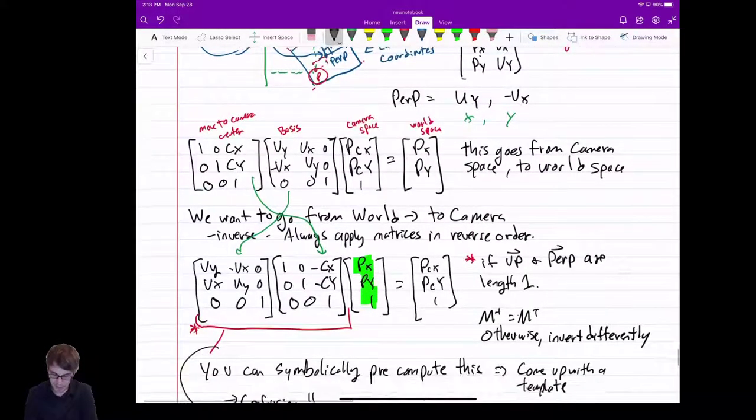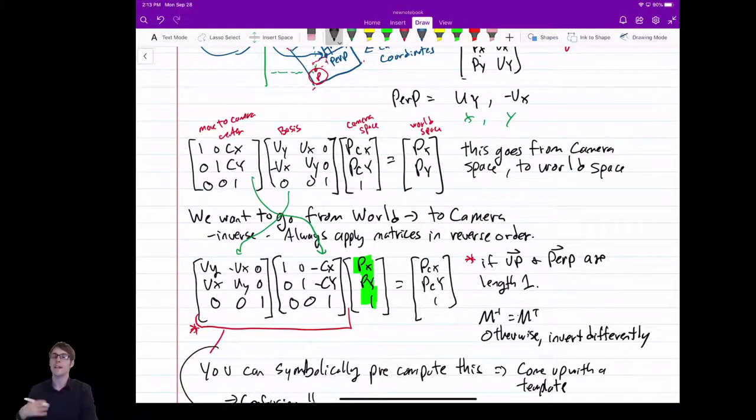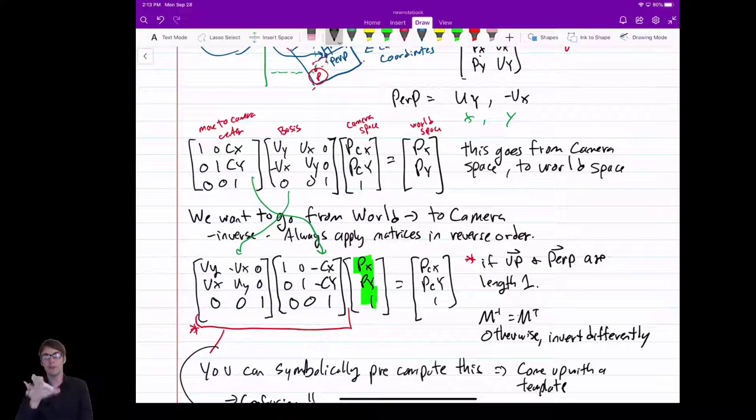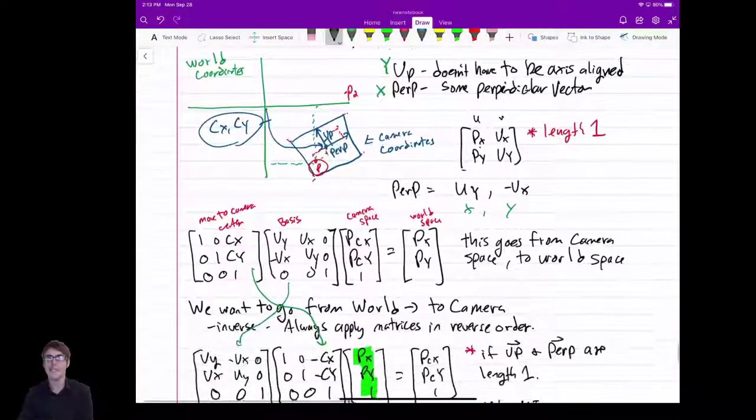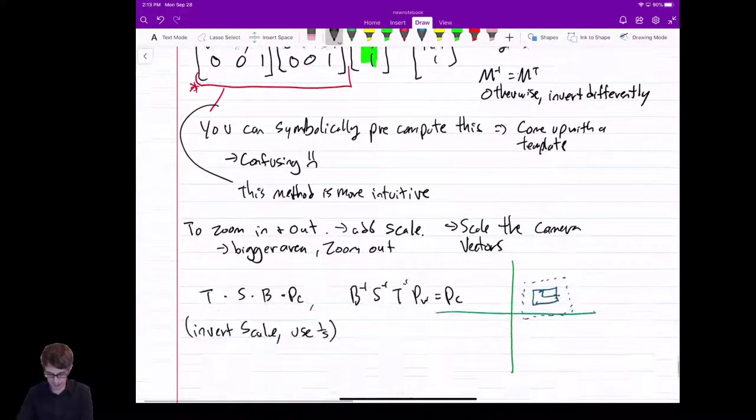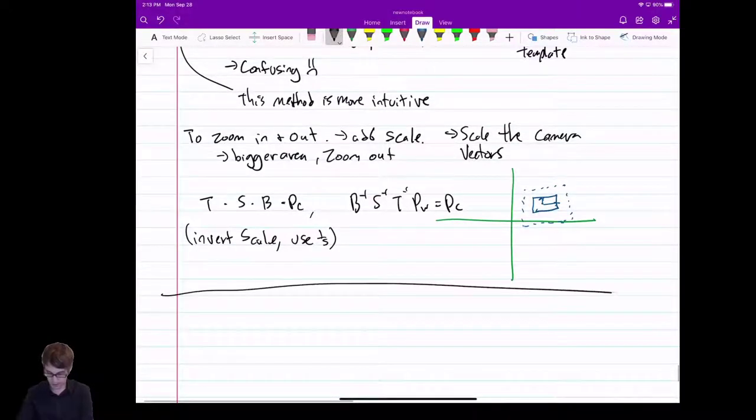This is a camera model. If you implement this, and you build these matrices, and you apply it to all of your points, you can move a camera to a different location. You can rotate it. You can zoom it in. You can zoom it out. All without playing with any of your model matrices or where things are placed in the world. You place them in the world. You're done. And then you place your camera. All right. Thanks.